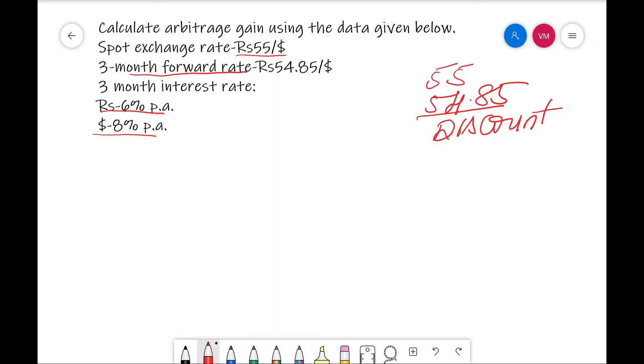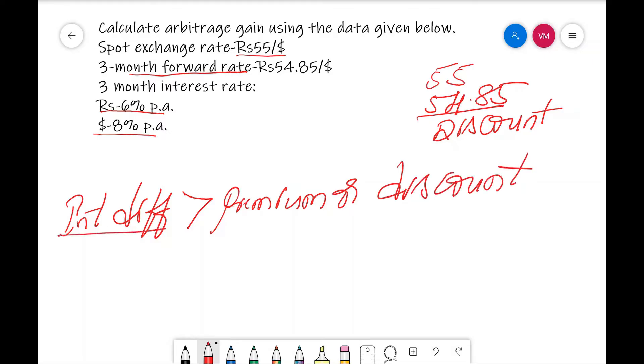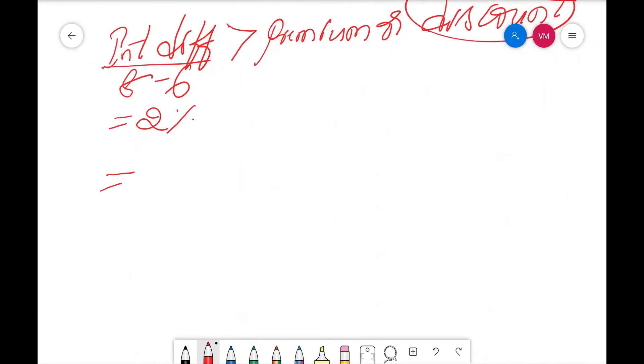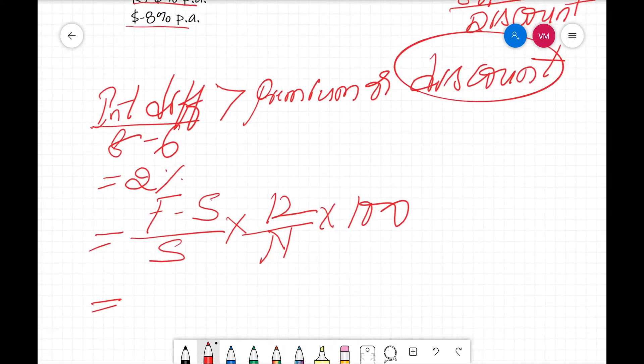The rule says interest differential should be greater than forward premium or discount. In this case, it is discount. What is the interest rate difference? 8 minus 6. That is 2%. Now, we need to check the forward discount percentage. What is the formula for that? Formula is forward rate minus spot rate divided by spot rate divided by n into 100.